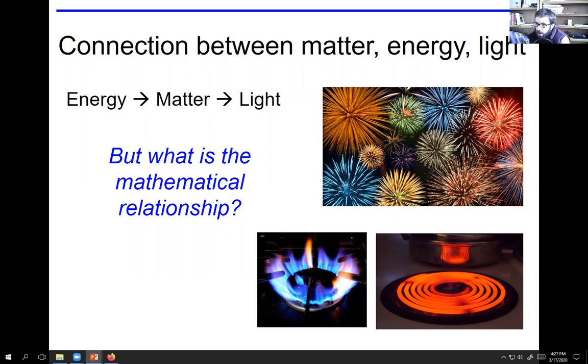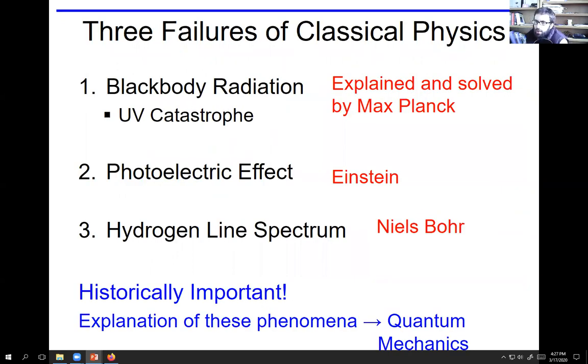Really where this all came about was scientists were trying to come up with the connection between matter, energy, and light. For centuries people knew that there was a relationship here, but problems arose when physicists tried to make these connections quantitatively, to come up with a mathematical relationship between matter, energy, and light. These processes are interconverting - matter will give off light, light is a form of energy.